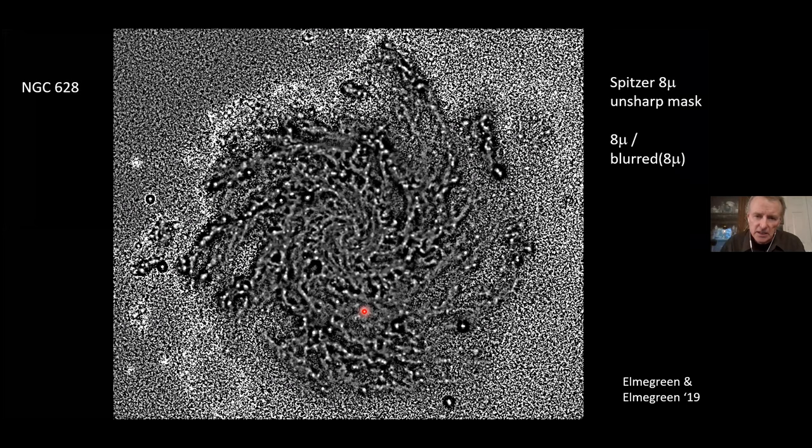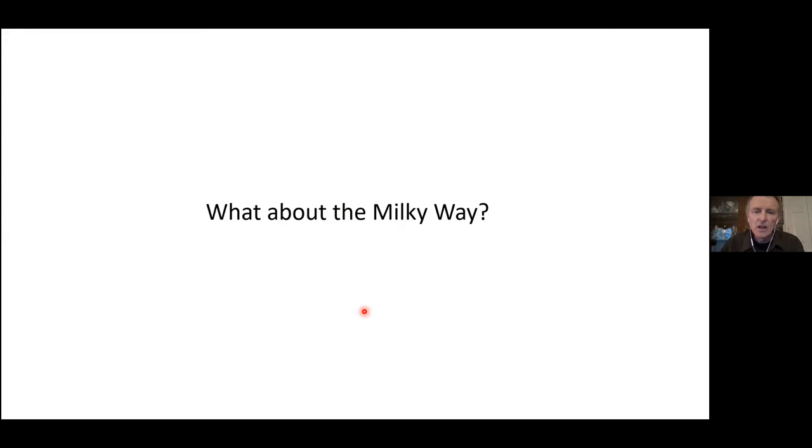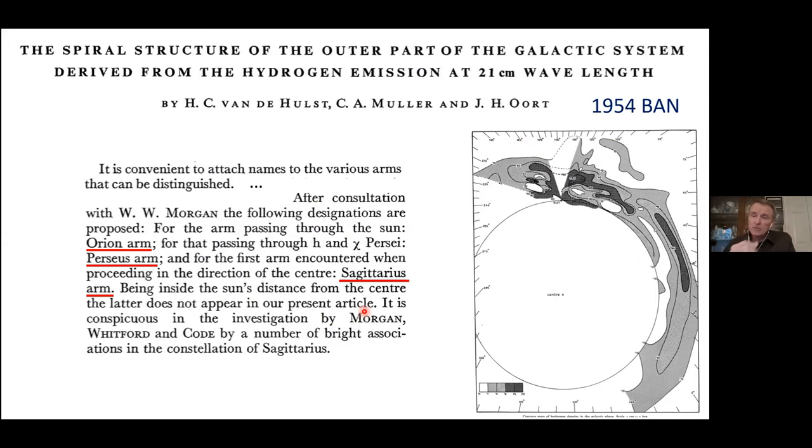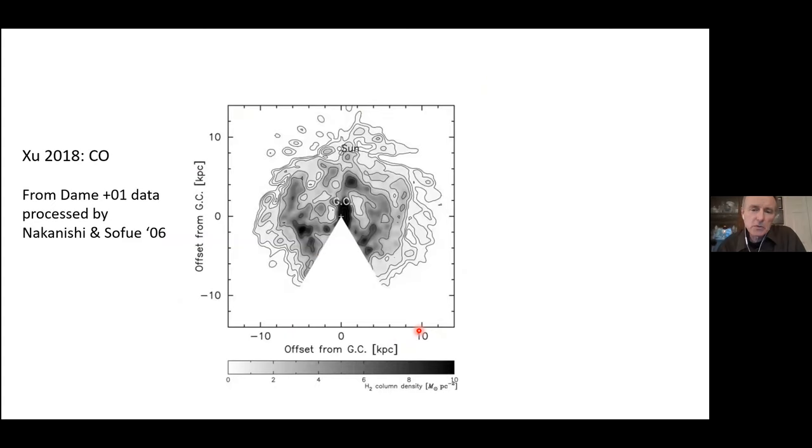So let's look at 628 again. There's the Spitzer image, and there's the unsharp mask image. And here I'm going to blink between these two, optical and unsharp mask. And you could see that we've been fooled all these years looking just at the optical. And we can't really see those little dots, which are showing us essentially all of the current star formation, younger than a million years or so in this galaxy.